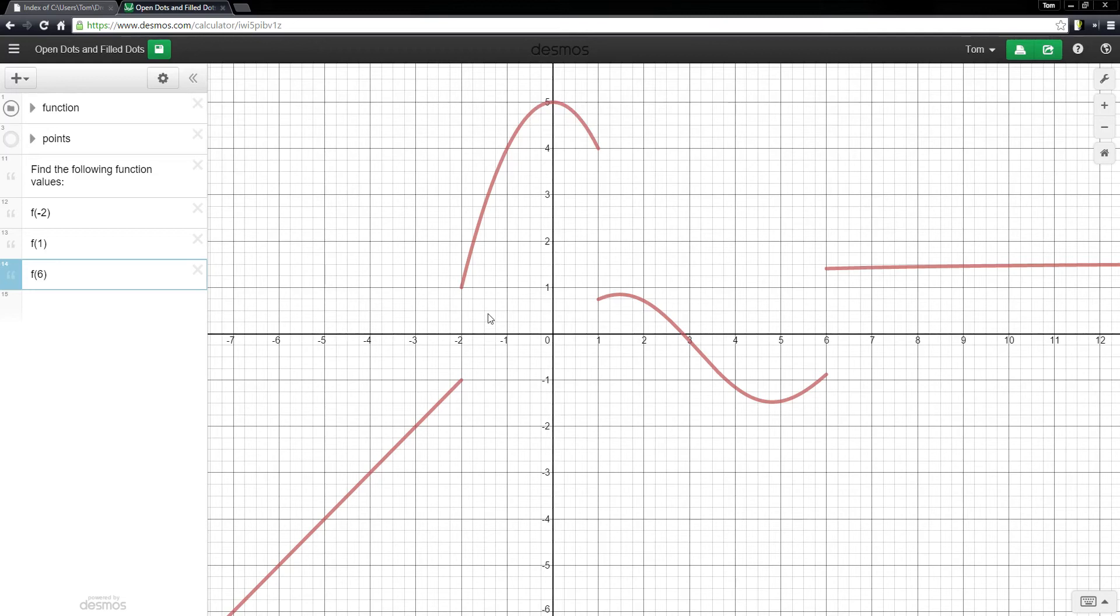Remember, these are functions, and functions for every x value in the domain have exactly one y value. And so here, I can't have both positive 1 and negative 1 as the point on the graph. Functions can't have that. It's got to be one or the other. So there's just some information missing when the graph looks like this.